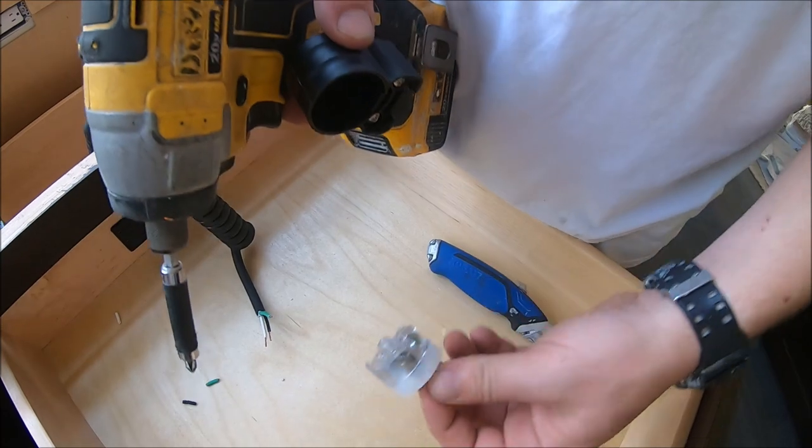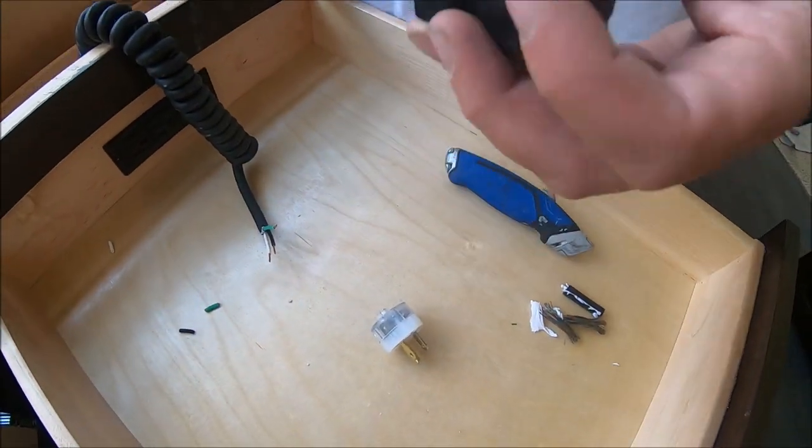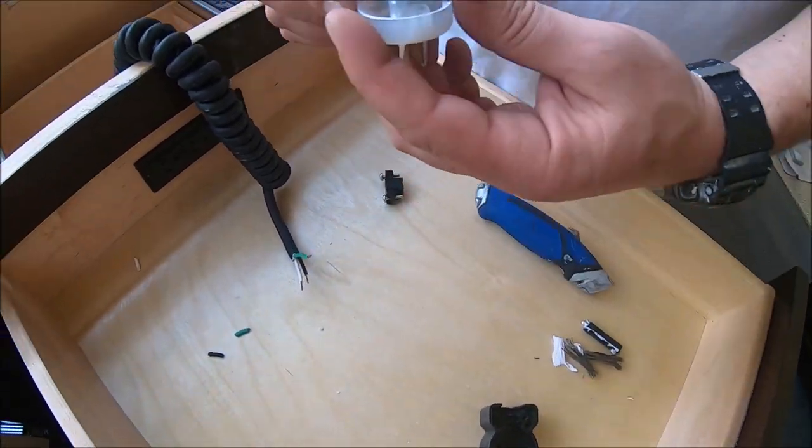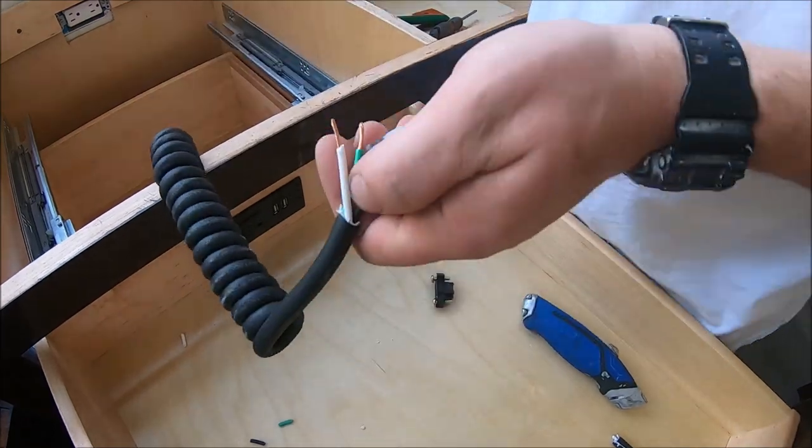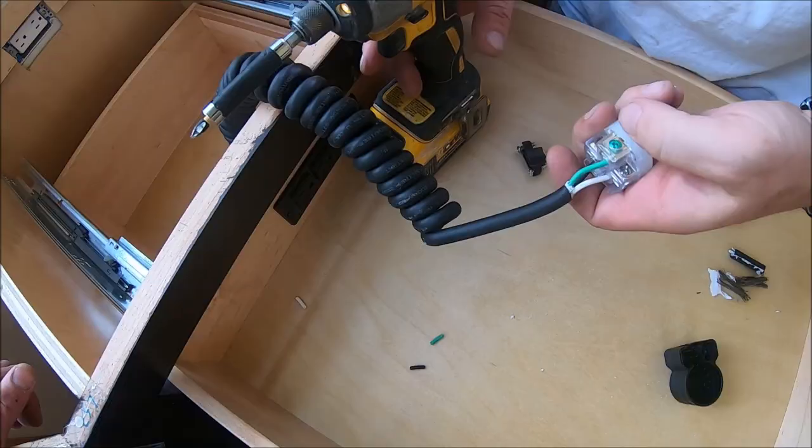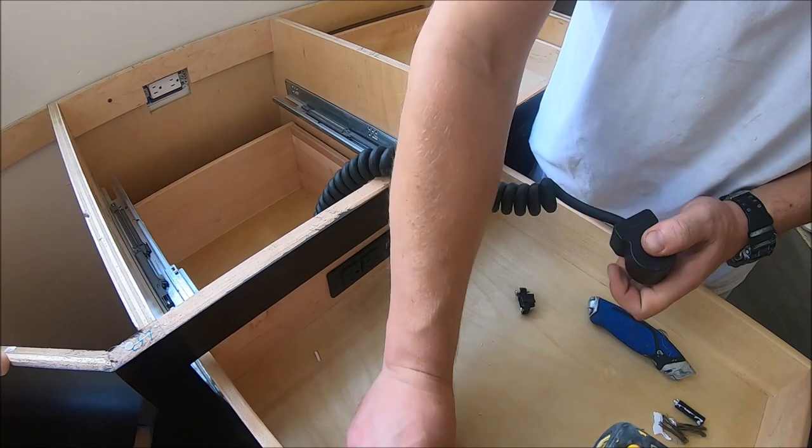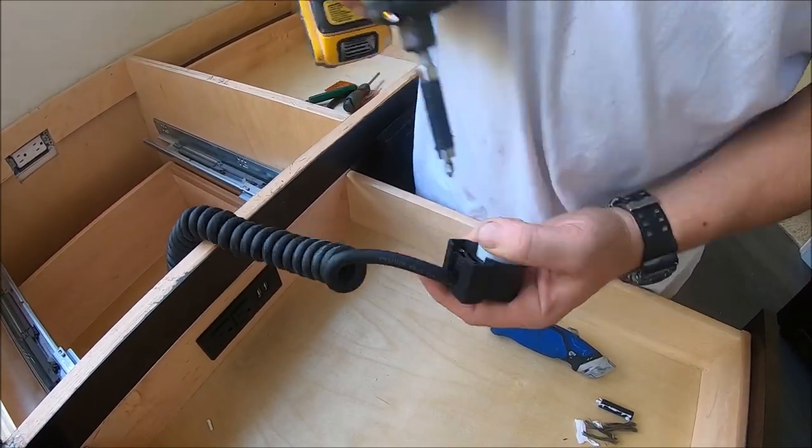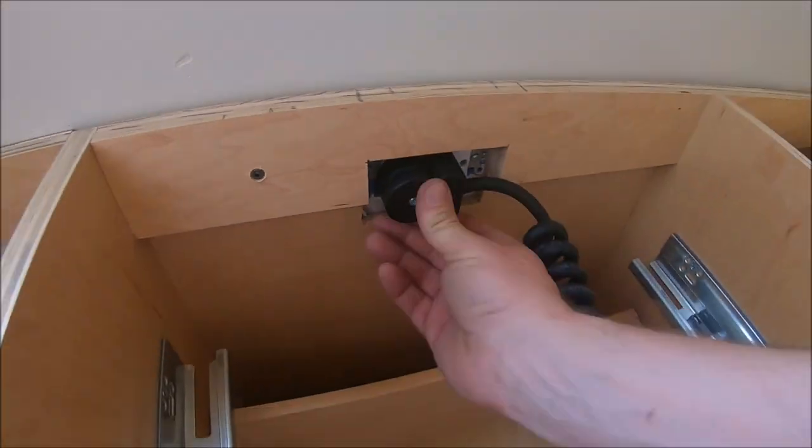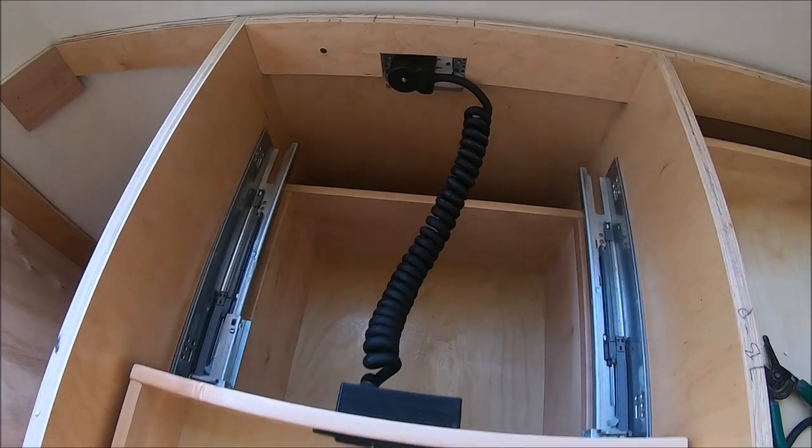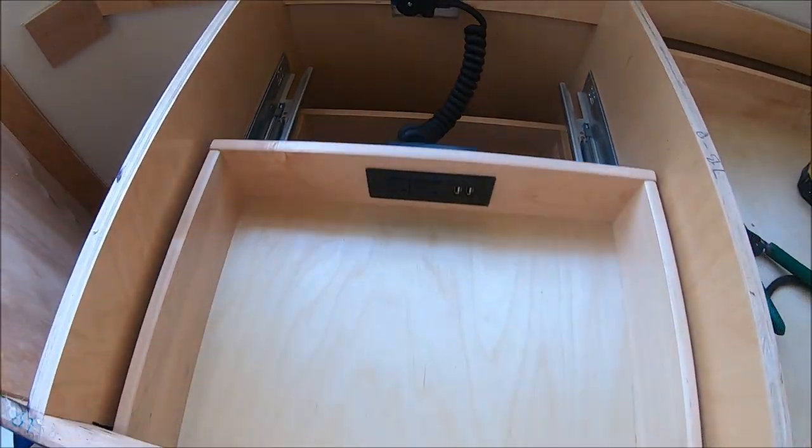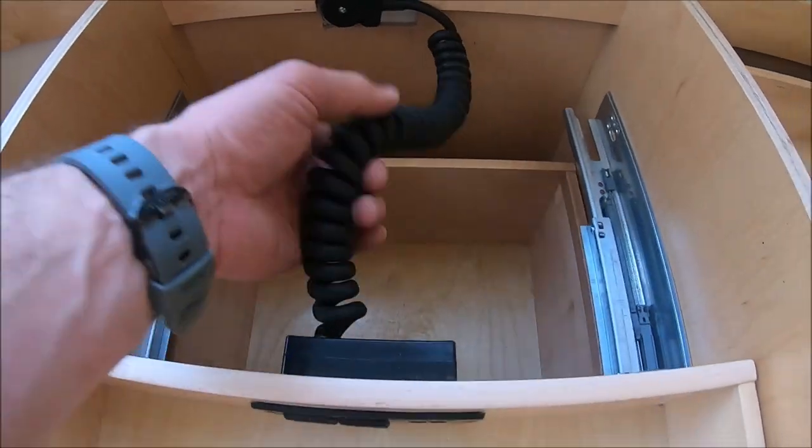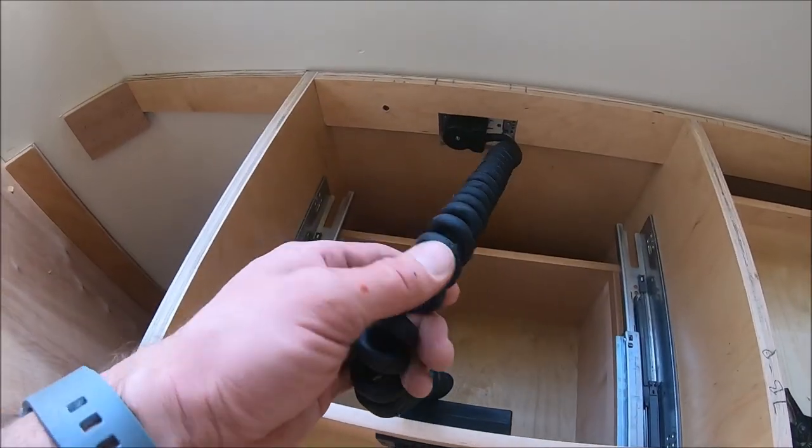So you can pick these up at Lowe's or Home Depot for about $10. Well, there is the final product, ladies and gentlemen. Let's quickly break down the cost. You have your plug unit here—two plugs, two USBs—as well as your coiled extension cord.